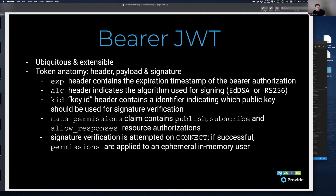A bearer JWT is quite great because they're ubiquitous at this point and highly extensible. For some quick anatomy: there's a header, payload, and signature that make up a bearer token. The fields we care about are the `exp` header — the expiration timestamp — where the server will set a timeout, and if the connection is still around when expiration occurs, the connection will be dropped. The `ALG` header indicates what algorithm was used for signing the token. And the `KID` header is the key ID — so if you have multiple keys used for signing, you can figure out which one to use for verification.